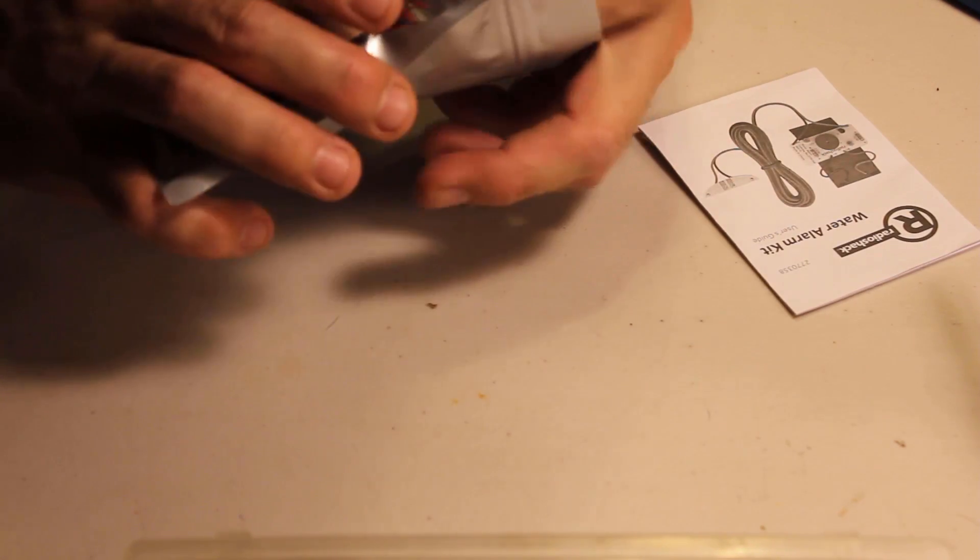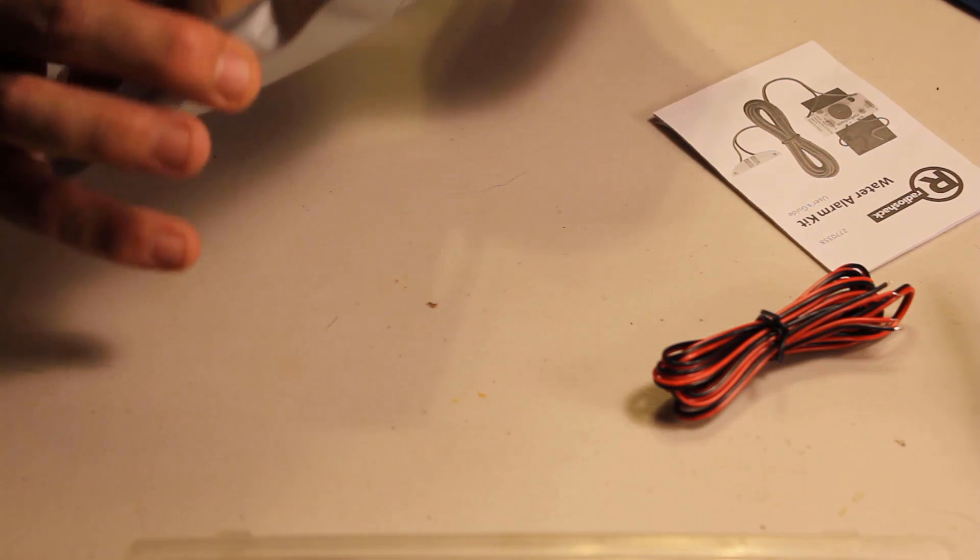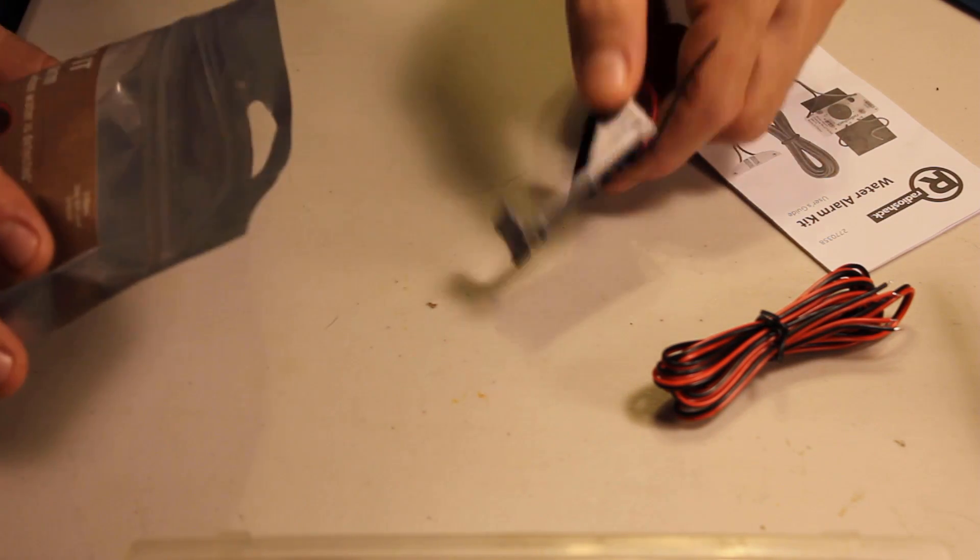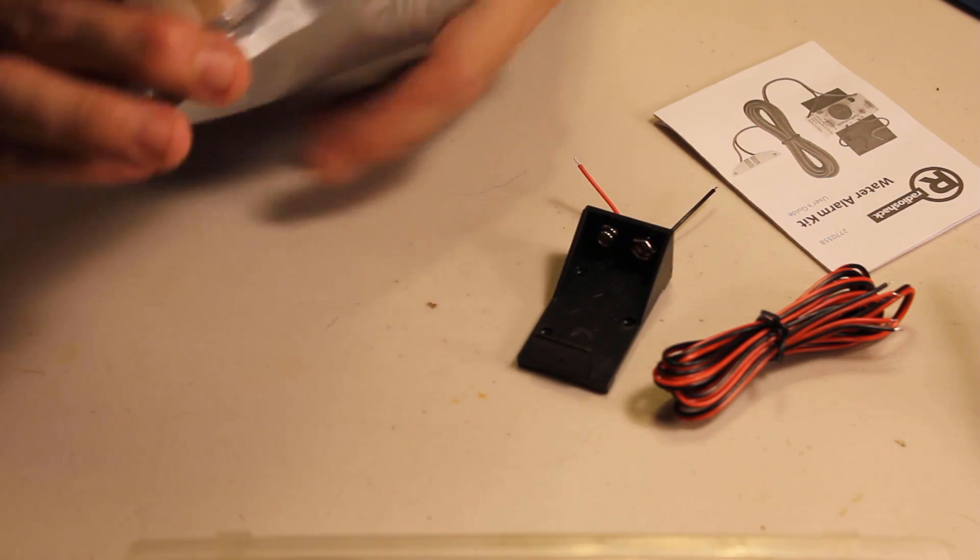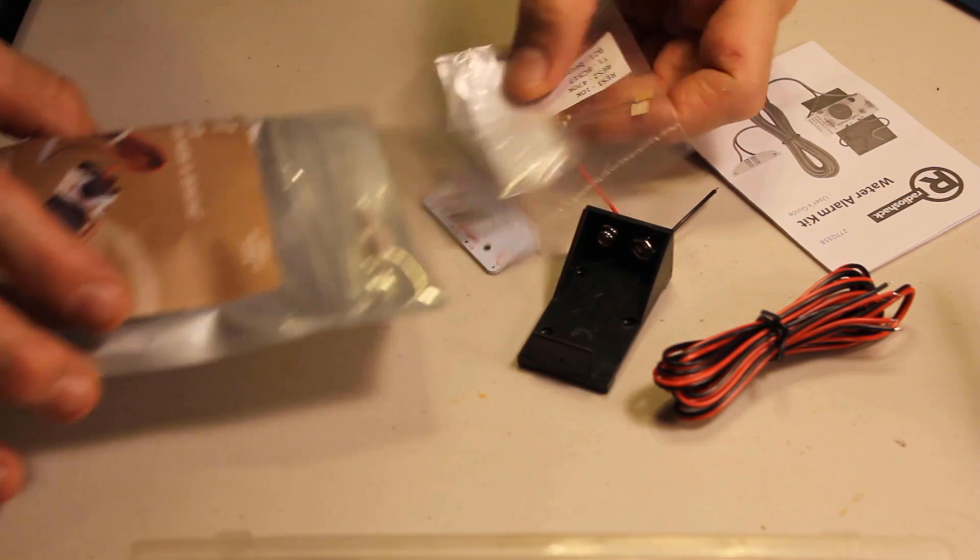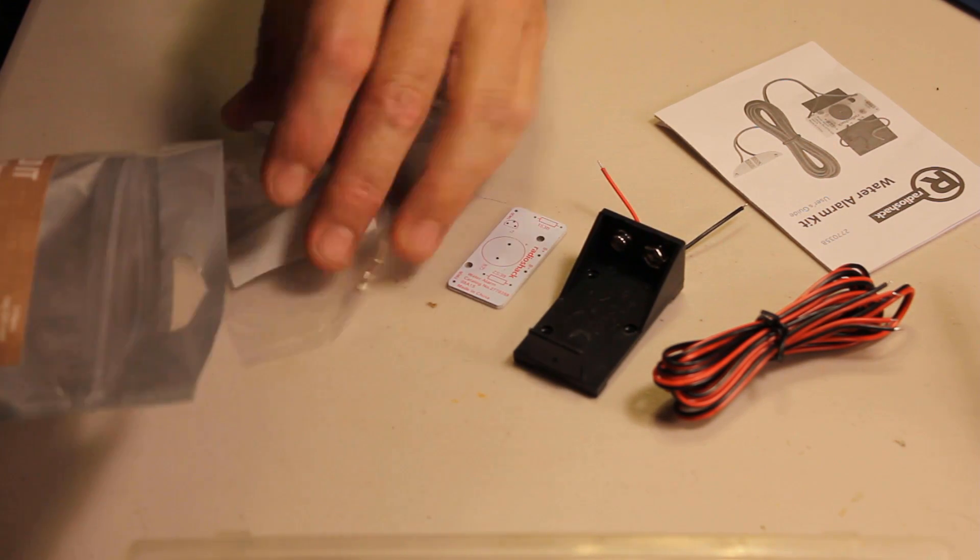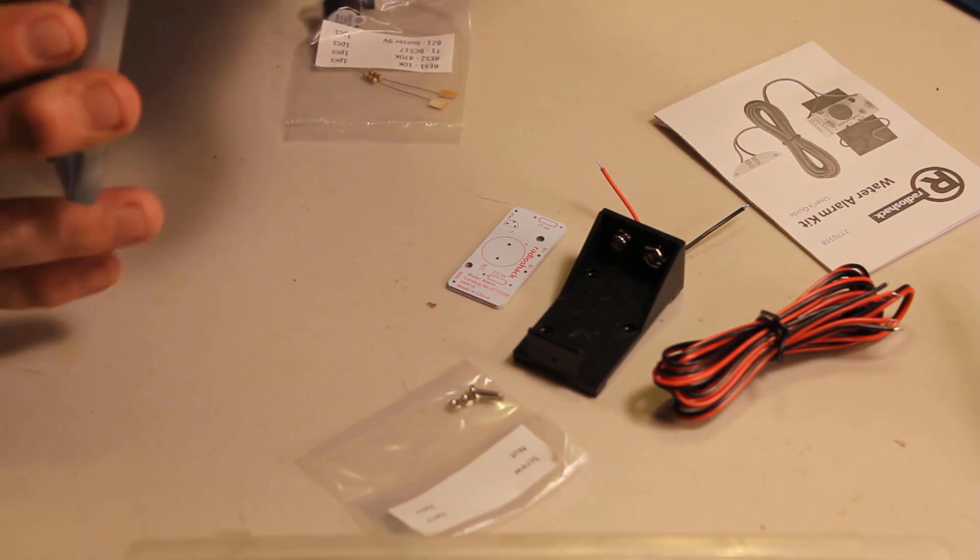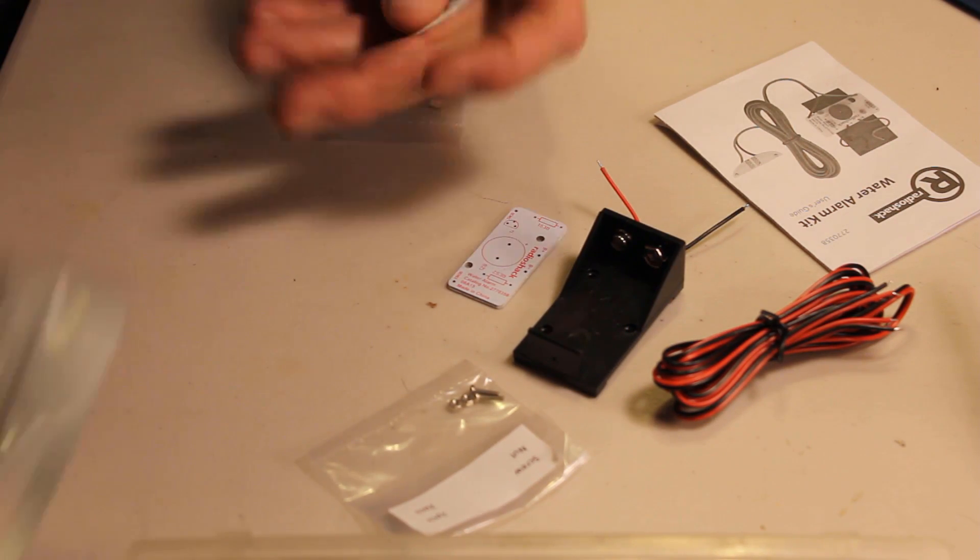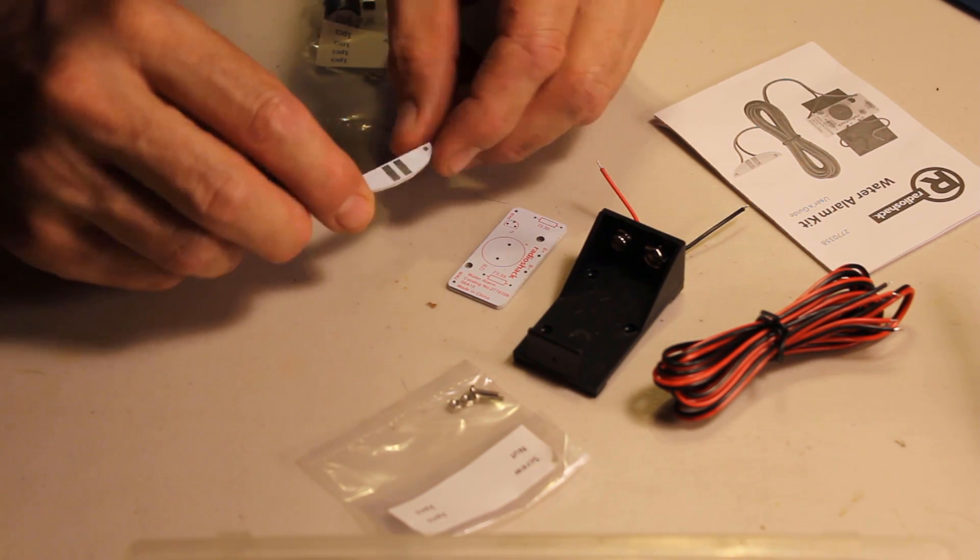I have the instructions. I have this piece of positive and negative wires. We have the 9 volt battery holder. And we have the circuit board. We have some screws and nuts.